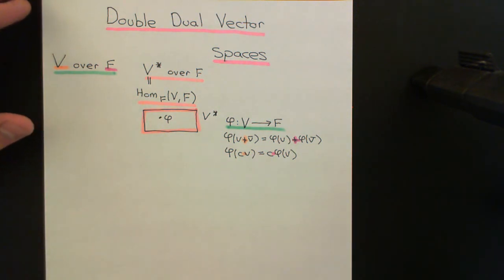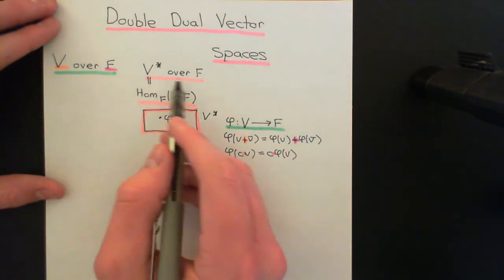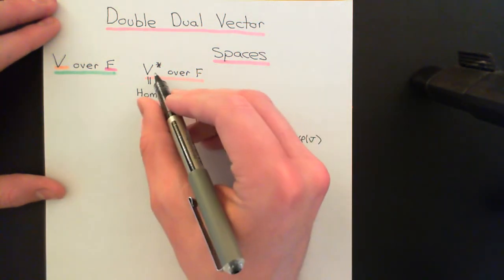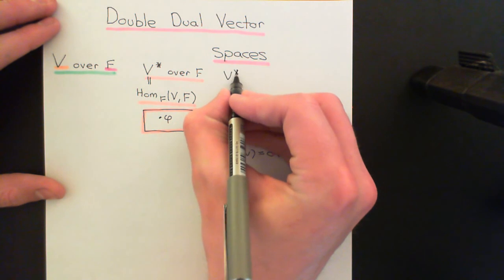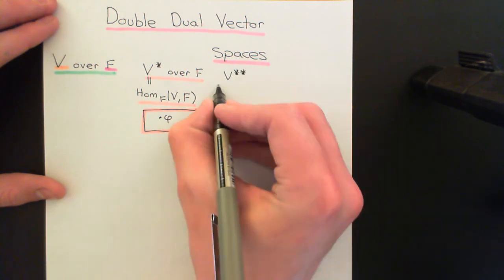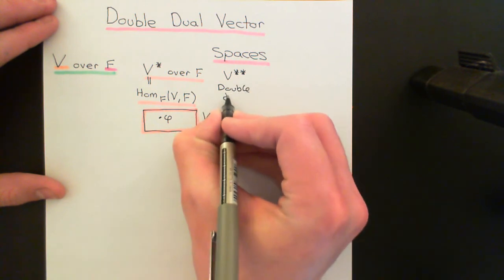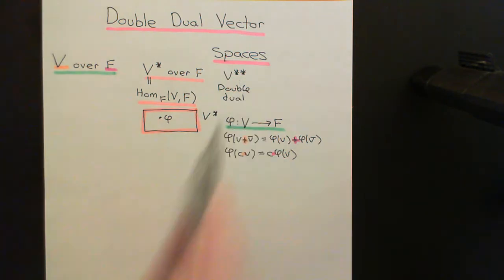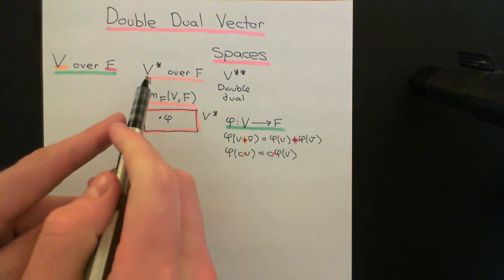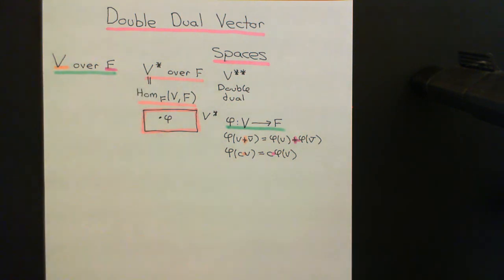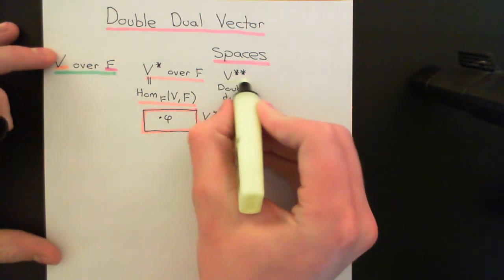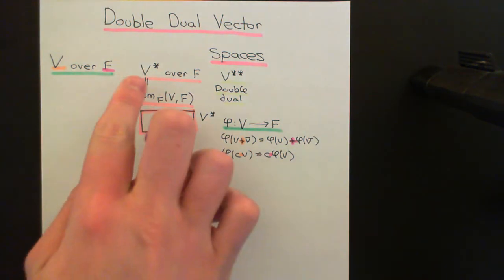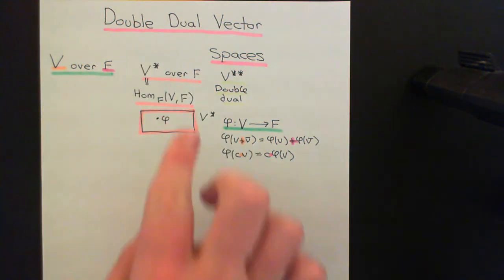We don't have to stop there. Since V* is itself a vector space over F, why not take the dual of this vector space? We can construct V** — V double star — called the double dual, which is just the dual of V*. The definition of V** is exactly the same with respect to V* as the definition of V* was with respect to V. As a set, V** consists of all homomorphisms over F from V* to F.